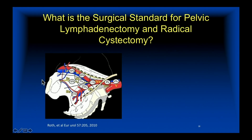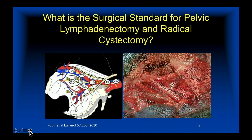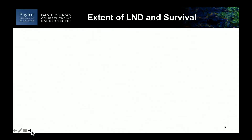We're back to the elegant mapping study from Studer. The community is in definite agreement and the guidelines agree: standard bilateral pelvic node dissection should be part of every radical cystectomy done with the intent to cure. The question is whether extending the dissection is also standard of care — and the short answer is I don't know. When you don't know, you do clinical trials.